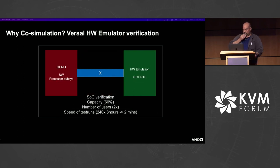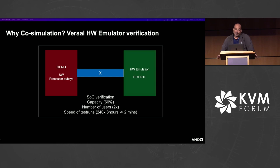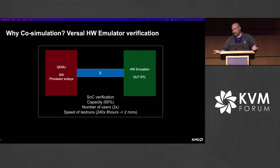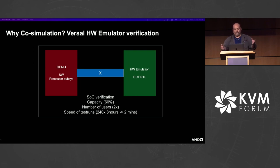Here's another example from Versal development: hooking up QEMU to a hardware emulator, which is typically capacity bound and slower. By moving some parts of the SOC to QEMU, we could increase capacity by 60%, meaning we could double the number of users or model a system that wouldn't otherwise be possible. And for software-driven tests exercising specific RTL, we now get a 240x speed-up on those test runs — pretty significant.